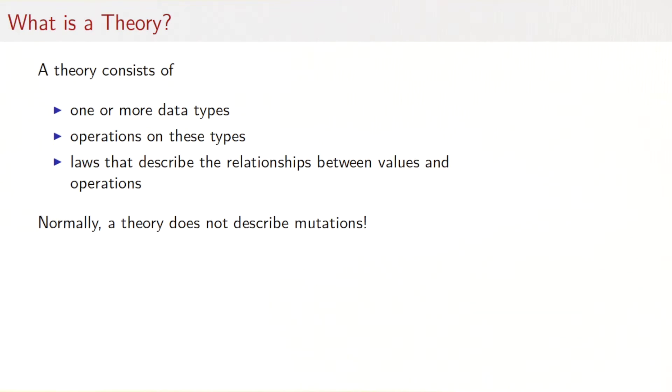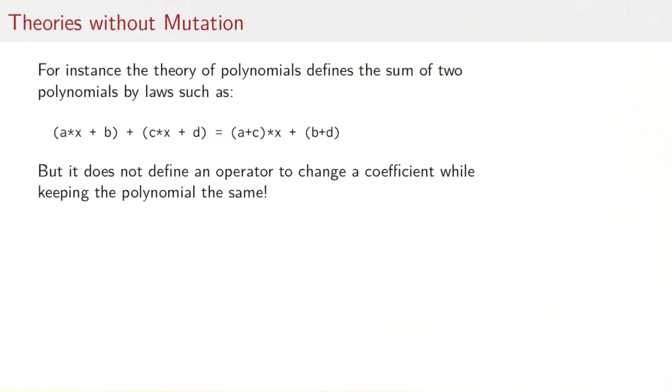So what is a theory? In mathematics, a theory consists of one or more data types, operations on these types, and laws that describe the relationships between the values and the operations. What's important is that a theory in mathematics does not describe mutations. A mutation means that I change something while keeping the identity of the thing the same.